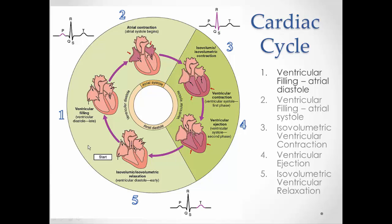Step one is ventricular filling with the atriums in diastole. Blood is coming in from the inferior and superior vena cava, or from the pulmonary veins, and entering the atriums. From there, because of gravity and general blood movement, it flows into the ventricles. So the ventricles are filling with blood, but the atriums in diastole haven't done anything — they're just passively allowing blood to pass through.